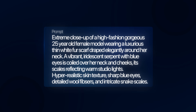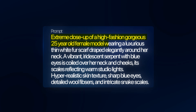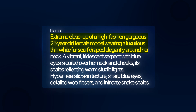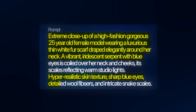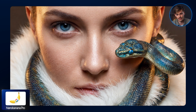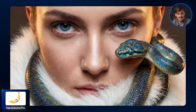Moving on to category two: details. I want to see if the AI can bring all the details I put in my prompt to life. The prompt is an extreme close-up of a high-fashion 25-year-old female model wearing a luxurious white fur scarf around her neck, with vibrant blue eyes and a serpent around her neck — hyper-realistic skin texture, sharp blue eyes, detailed wool fiber, and visible snake scales. With Nano Banana Pro, the detail on her face, the snake, the blueness in the eyes, even the little hairs on her cheeks and between her eyebrows — it's amazing. The white scarf is super detailed and the snake looks realistic and vibrant.